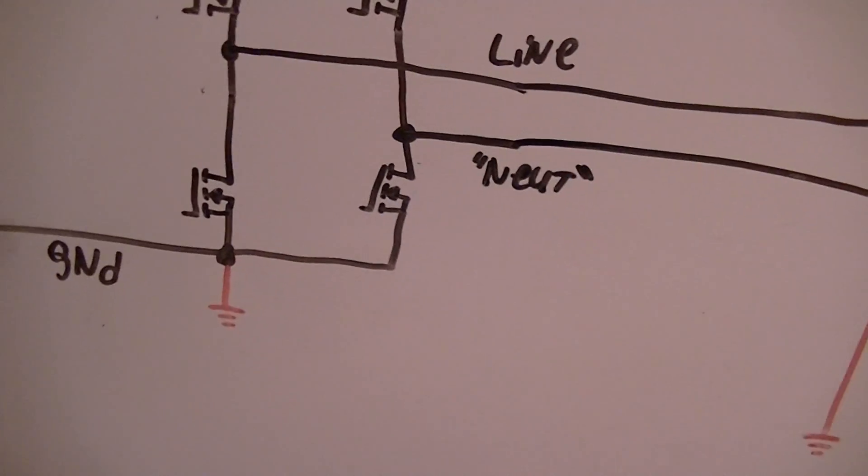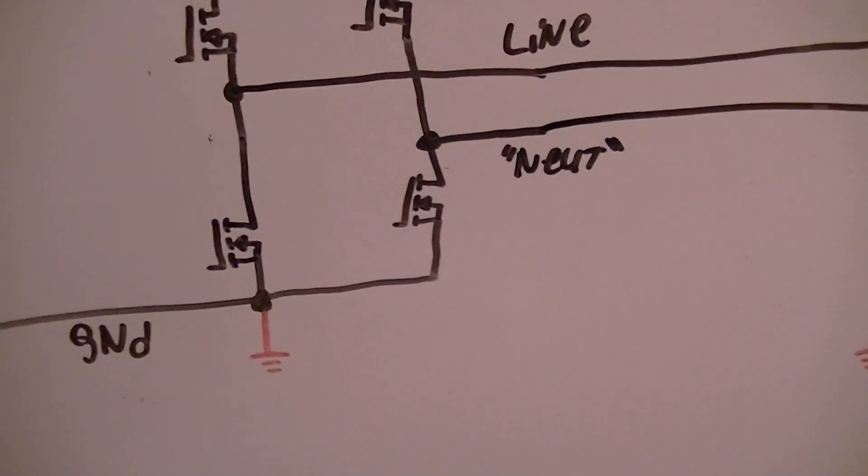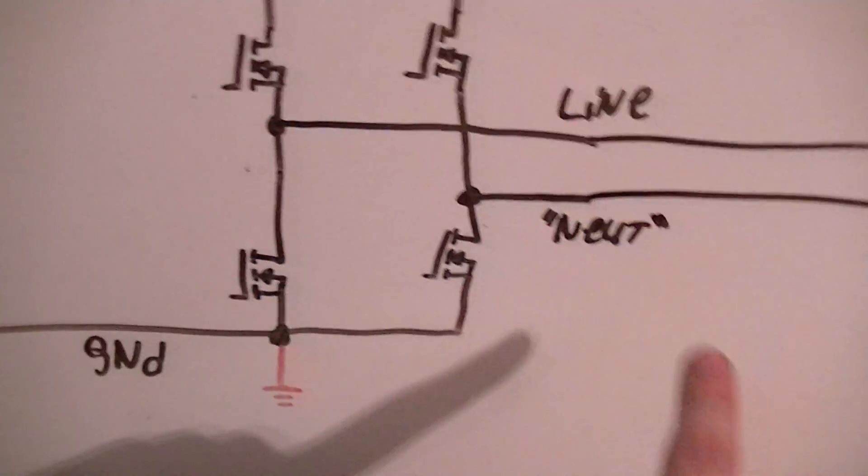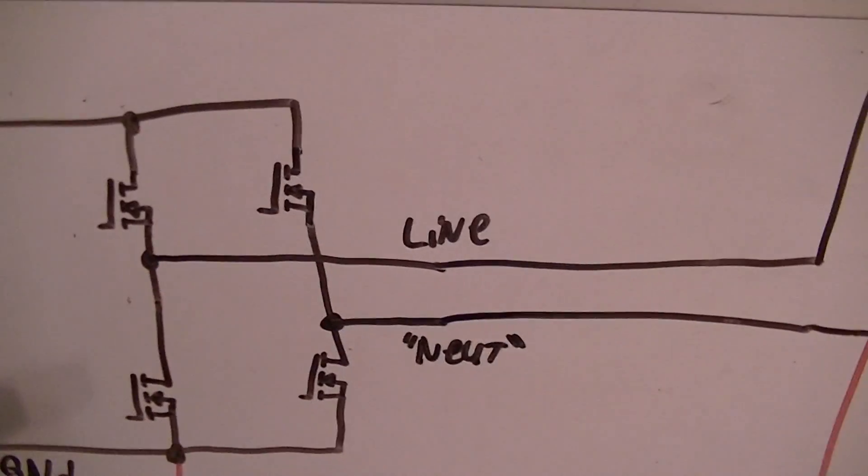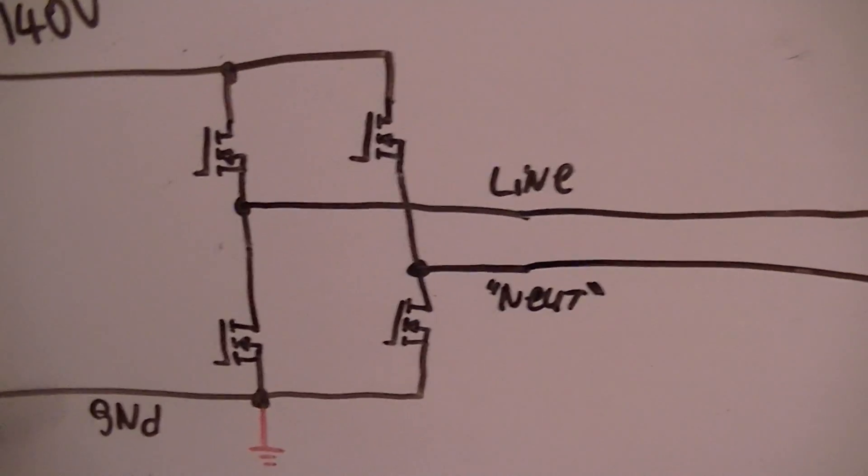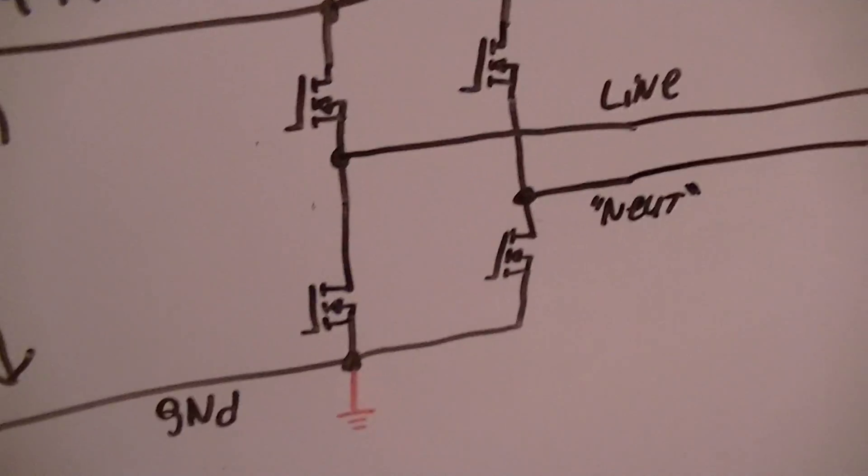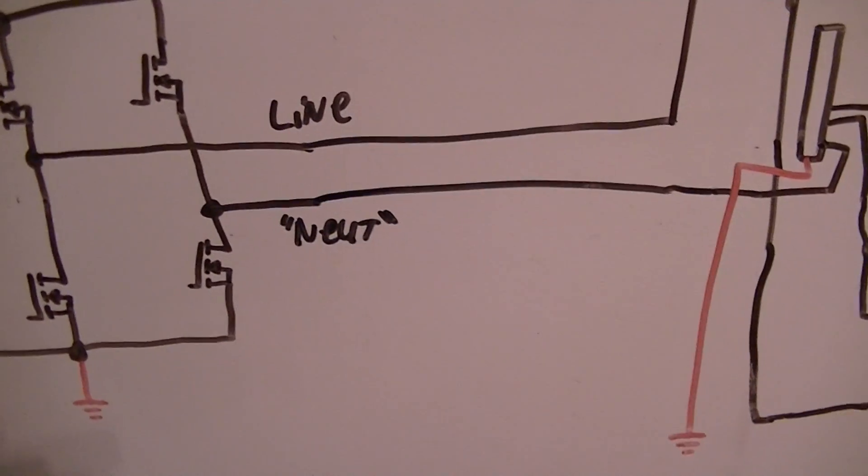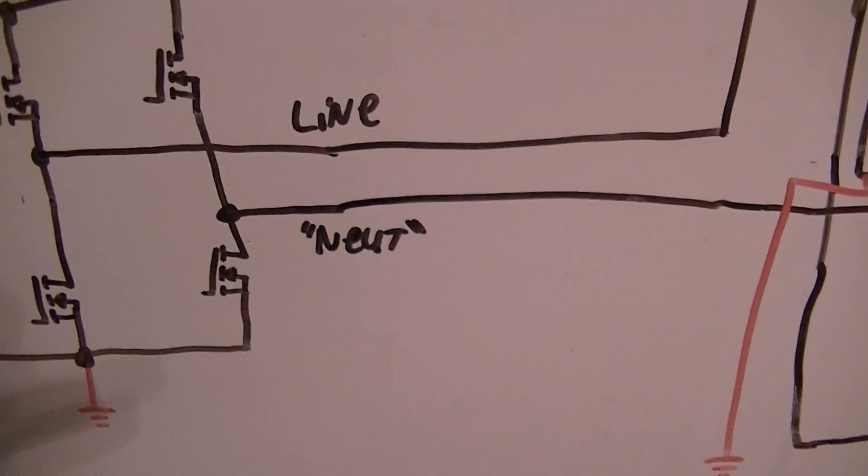However, for the other portion of the waveform when these two MOSFETs are conducting, the neutral is at 140 volts minus whatever the losses are. Usually it's 140 volts, could be as much as 150 volts depending on the inverter. It's still well in excess of the dielectric breakdown potential of human skin and could kill you.